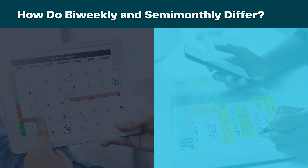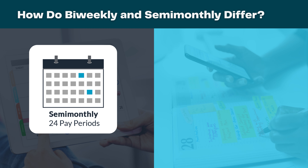How do bi-weekly and semi-monthly differ? This is a common question that employers have, as the two seem quite similar. They are, in fact, different and actually provide employees a different amount of checks throughout the year. Semi-monthly means that two paychecks are distributed each month, most often on the 15th and 30th. If either of these dates falls on the weekend, paychecks are distributed on the preceding Friday. When using a semi-monthly payroll system, you will always have exactly 24 pay periods per year.